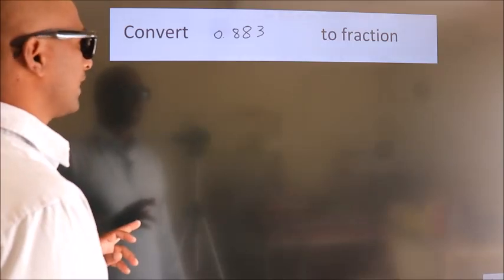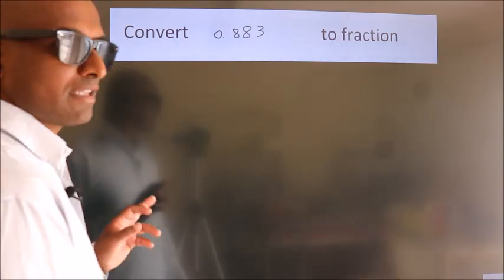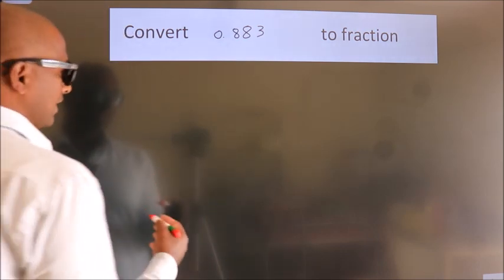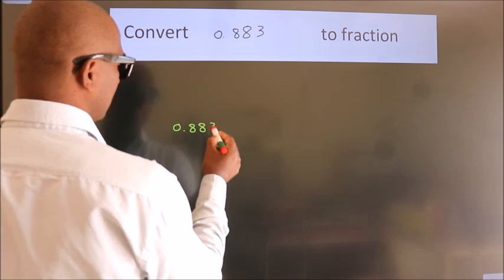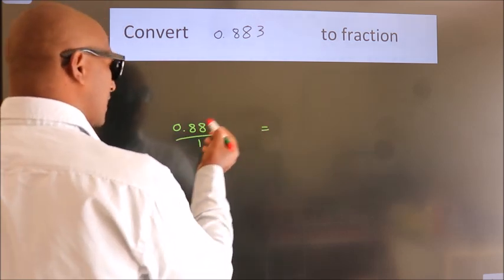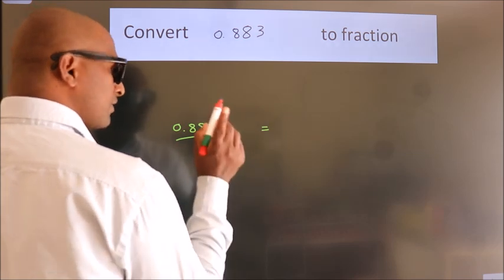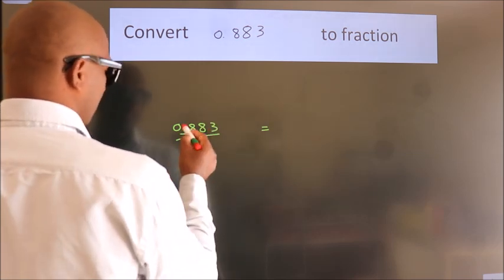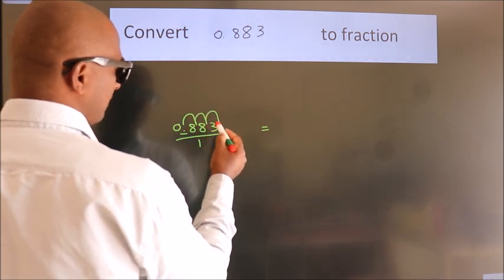Convert 0.883 to a fraction. Given is 0.883. To convert this to a fraction, we have to move this decimal after 1, 2, 3 numbers.